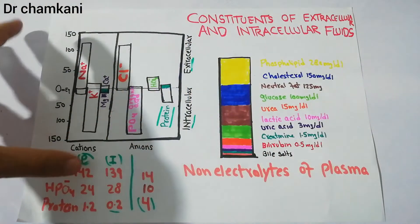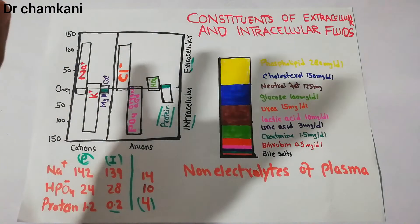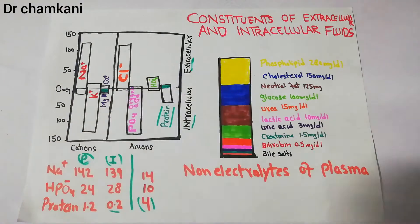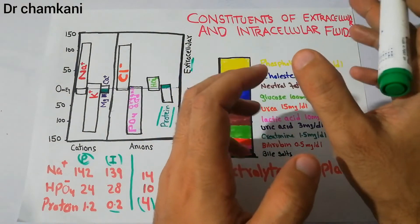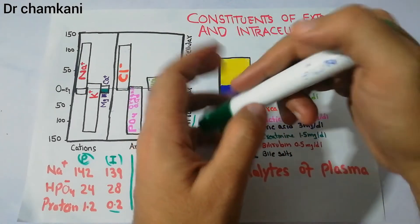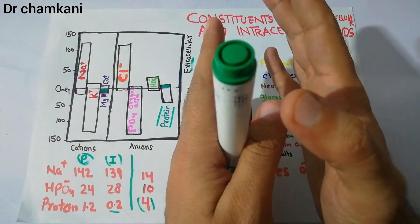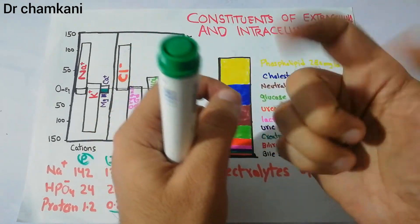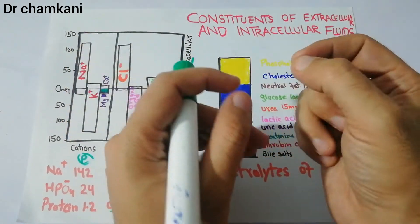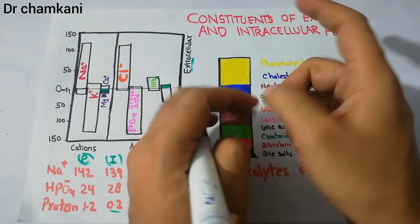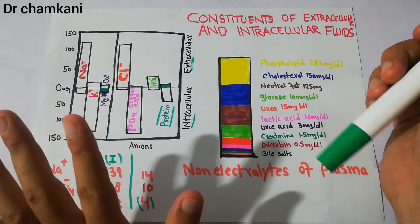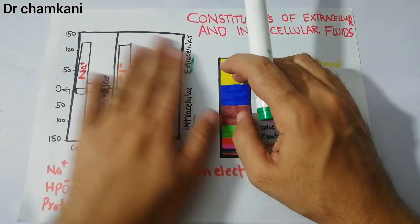We have highlighted a few substances where the differences are quite large, but there are many more substances that we cannot discuss in detail here. This gives a brief introduction to the differences in constituents of the extracellular and intracellular fluids, how differences arise due to protein charges, and how some concentration differences exist between plasma and interstitial fluid even though both are part of the extracellular fluid.